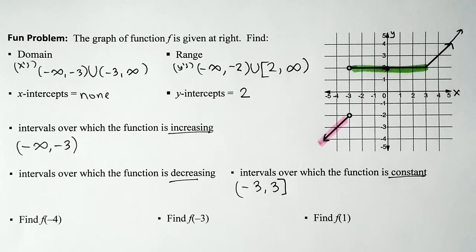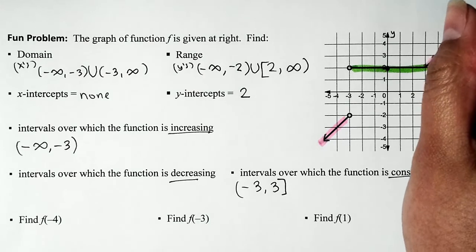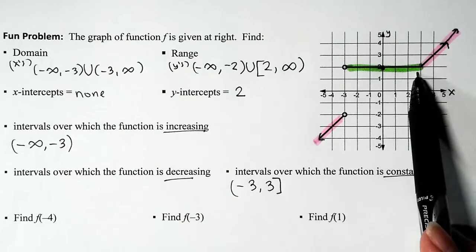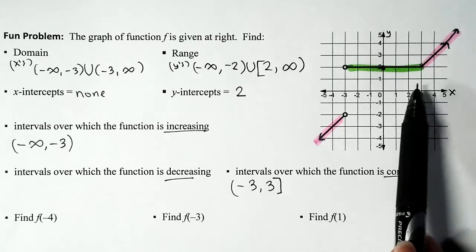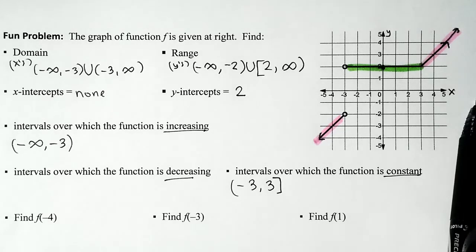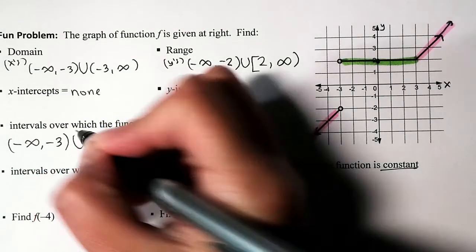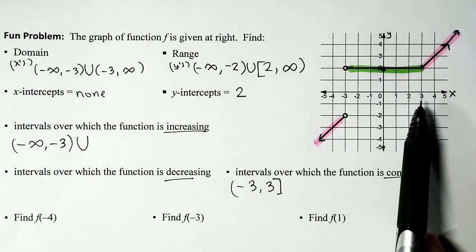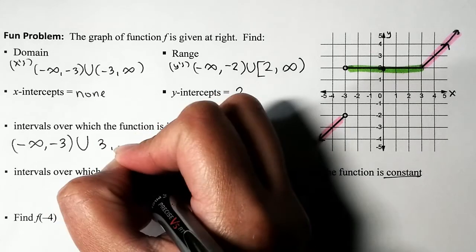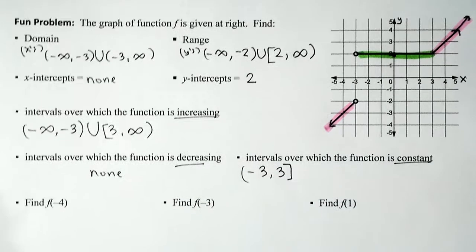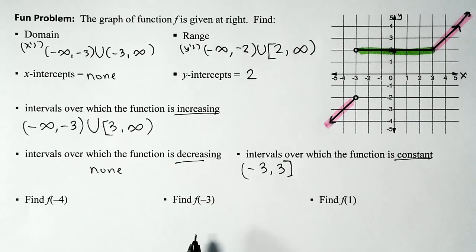After x equals 3, the graph goes up again — increasing. So the function is also increasing from x equals 3 to positive infinity: the interval (3, ∞). We already have an increasing interval, so we add a union symbol. The function is increasing on (-∞, -3) union (3, ∞). There is no interval where the function is decreasing, so for decreasing just write none.